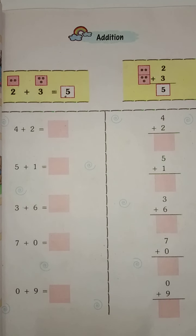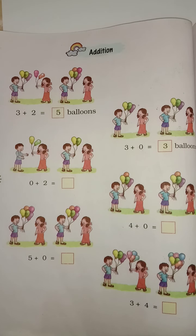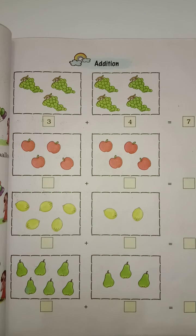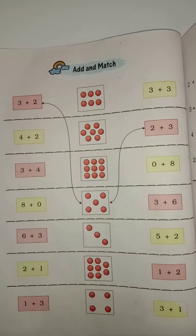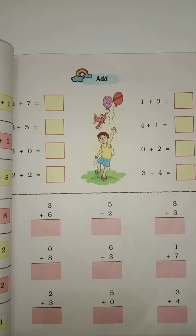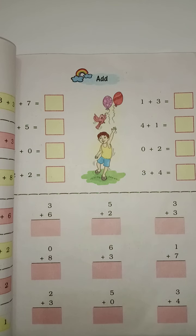Today's homework is you have to complete page number 55. These are horizontal addition and these are vertical addition. And page number 56, add 0 to the numbers. Then page 57, 58, and 59. Children, complete the homework neatly. See you next class. Thank you, children.